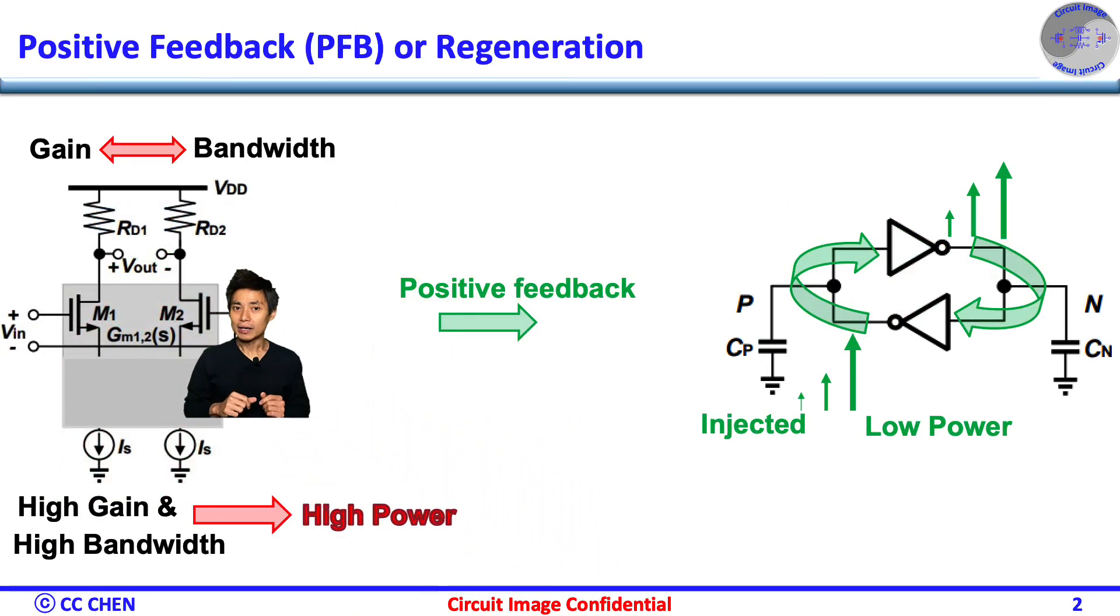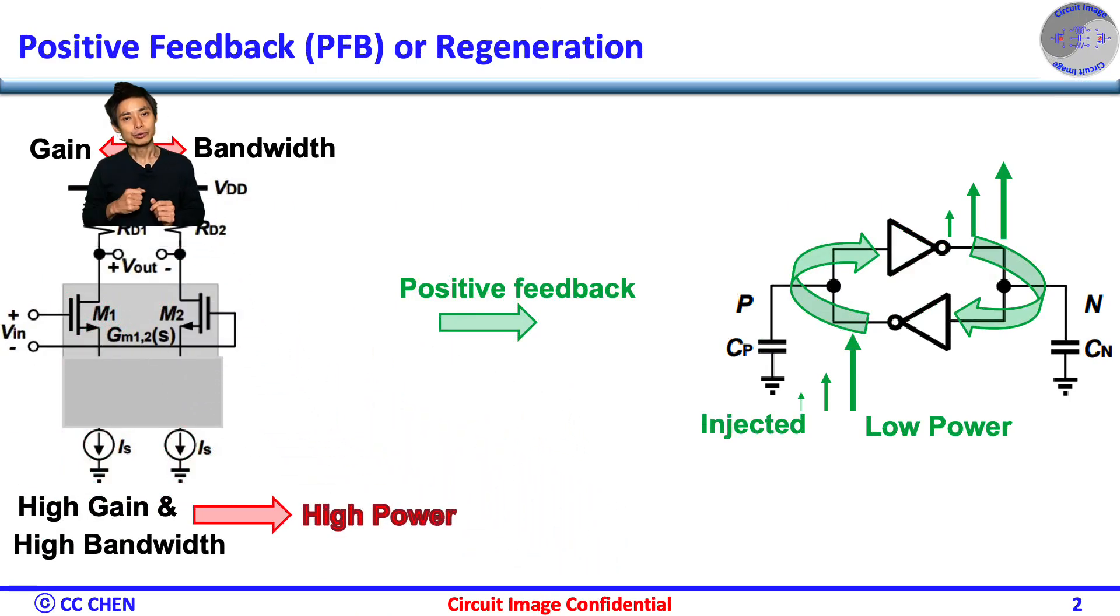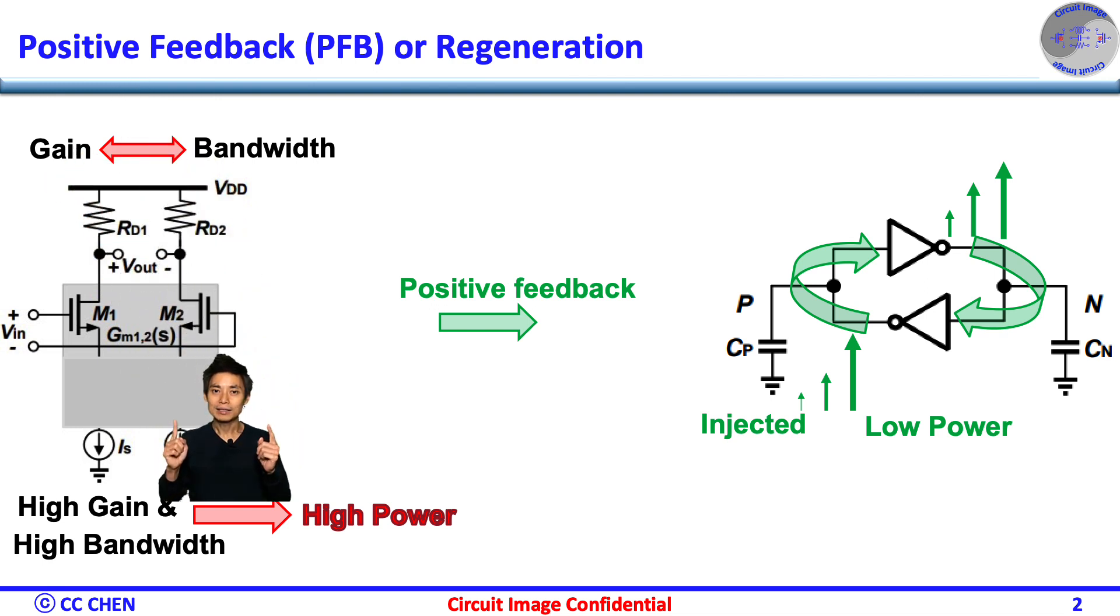The traditional linear amplifier must trade off between the gain and the bandwidth. To achieve a high gain along with a high bandwidth, the power is always too high.